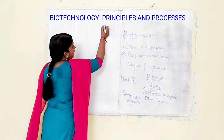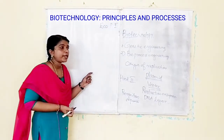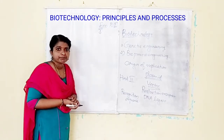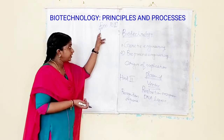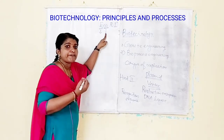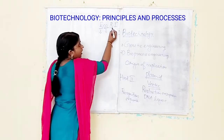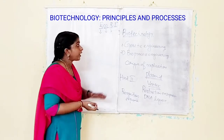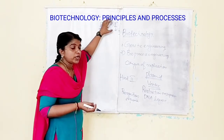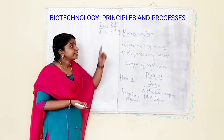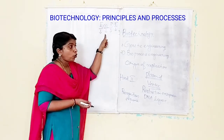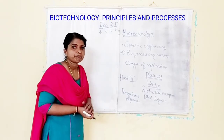These enzymes are named systematically: the first letter indicates the genus name of the organism from which it is isolated, the second letter indicates the species name, then the strain, and the Roman numeral indicates the order in which it was isolated. For example, EcoRI — E for Escherichia (genus), co for coli (species), R for the strain, and I for the order of isolation.